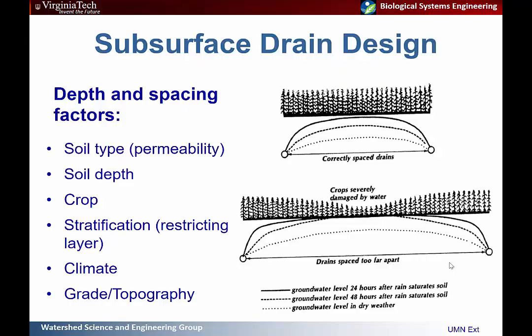Tile drainage is normally limited to flatter slopes because it is prohibitively expensive to install the number of drainage control structures required to keep the water table close enough to the surface at upslope areas, as opposed to all draining down to the lower slope of the field.